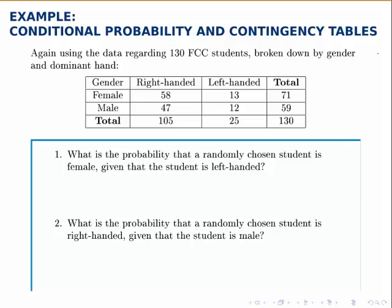We're again given this data about the 130 FCC students, broken down by gender and whether they're right-handed or left-handed. Now though, we're going to calculate conditional probabilities from this table.